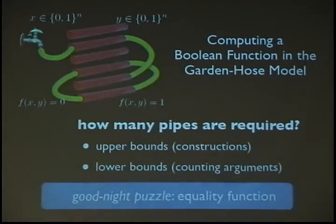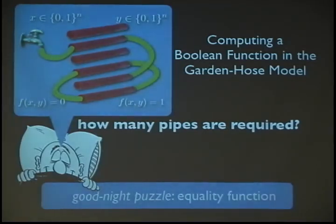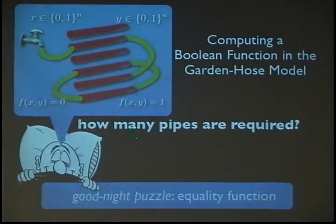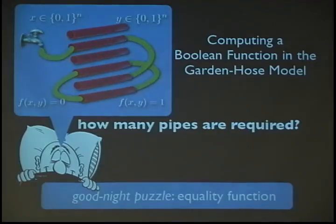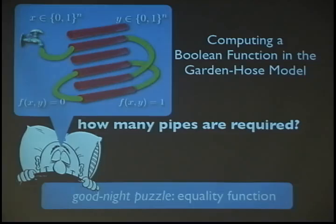To get you started thinking about this model, I'd like to propose a good night puzzle. Once you're in bed tonight, take a minute or two or three and think about this simple model and try to figure out how many pipes you need to compute the equality function. The equality function is 1 if x equals y and 0 otherwise. If you figure out some solution, please come talk to me tomorrow — I'm really interested in discussing this with you.